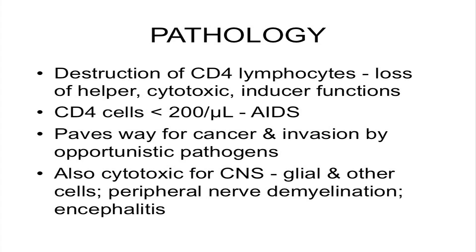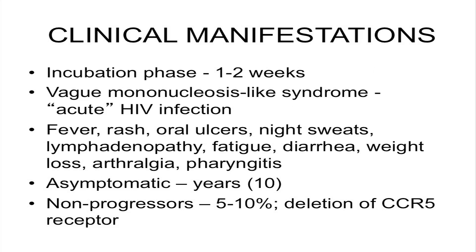The virus itself is also cytotoxic in the central nervous system, affecting glial and other cells, and can lead to peripheral nerve demyelination and encephalitis. Clinically, the incubation period is about one to two weeks, then the patient may experience a vague mononucleosis-like syndrome — now termed acute HIV infection — characterized by fever, rash, oral ulcers, night sweats, lymphadenopathy, fatigue, diarrhea, weight loss, arthralgias, and pharyngitis. Typically that goes away and the infection becomes asymptomatic for up to 10 years. A small number of people seem to not progress — they remain asymptomatic, possibly due to a particular virus strain or absence of the right host receptors.